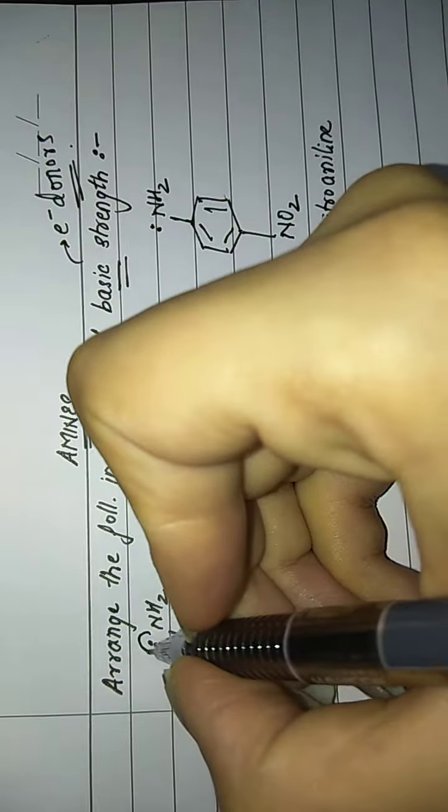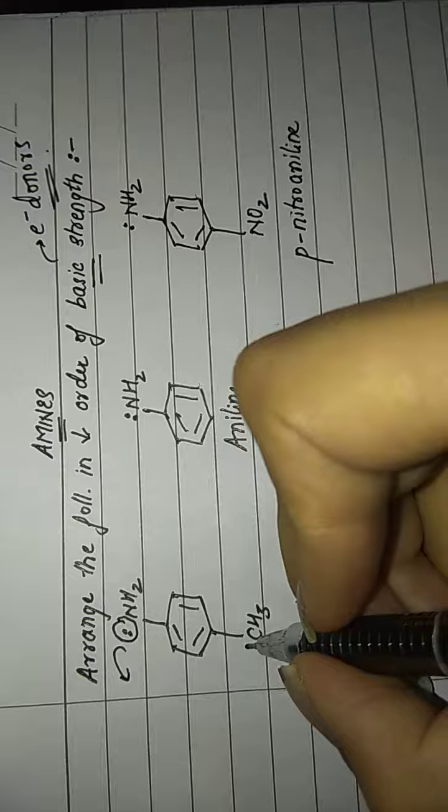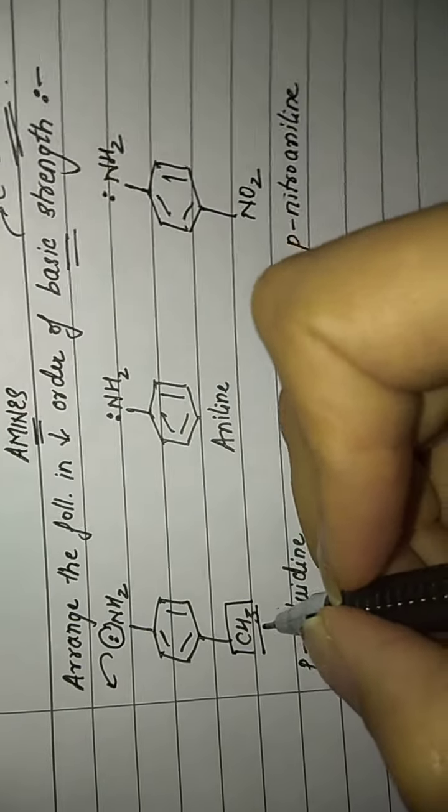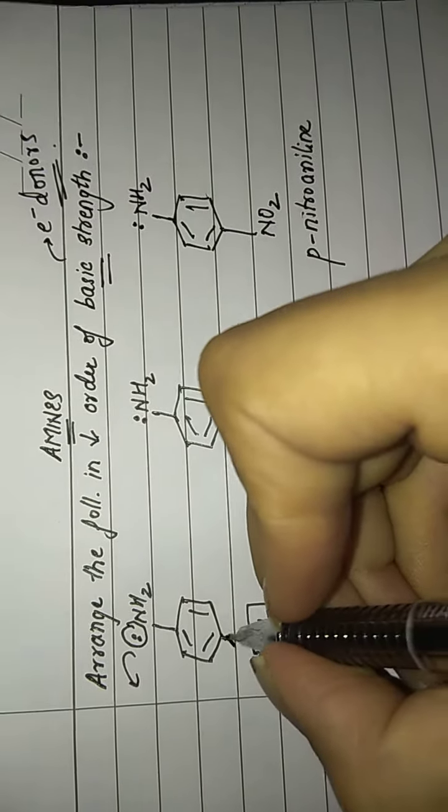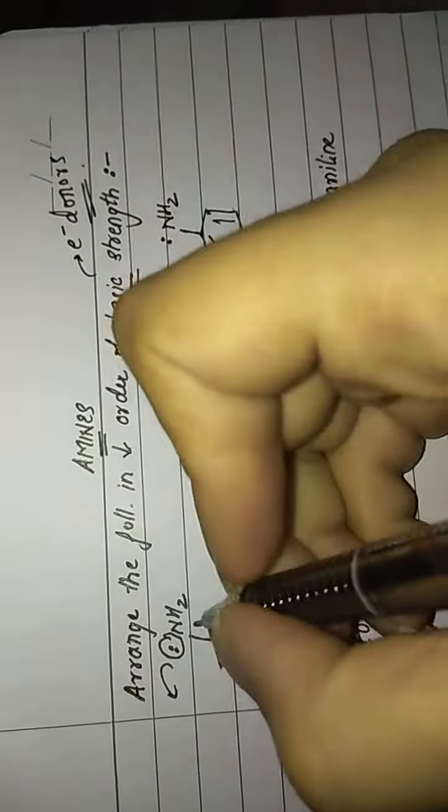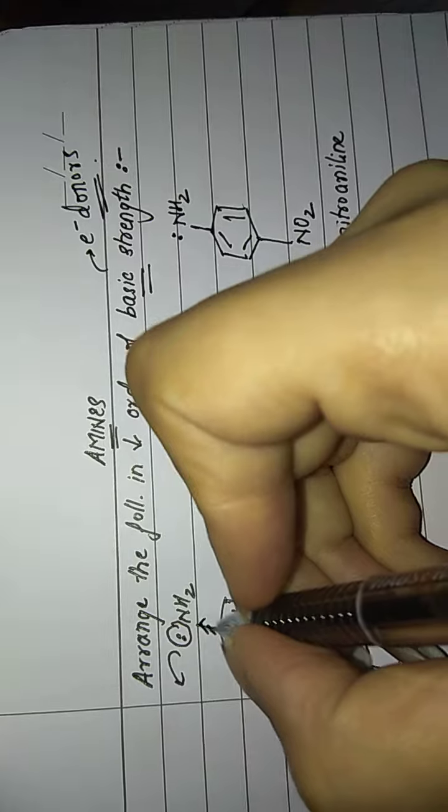We can see an electron releasing, an electron donating group attached at the para position. So this would constantly supply electron density to the benzene ring, and the benzene ring in turn would constantly supply electron density to the nitrogen atom.